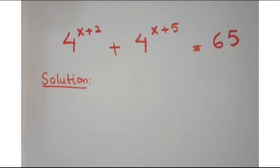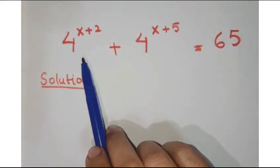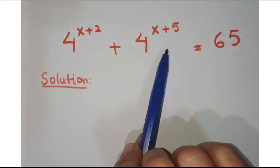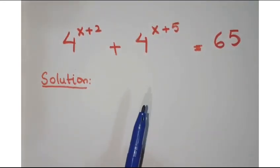Hello friends, welcome to the learning curve. Now look at this question: 4 to the power x plus 2 plus 4 to the power x plus 5 equals 65.